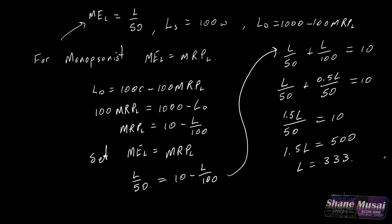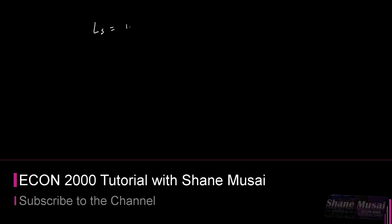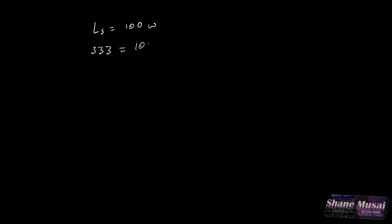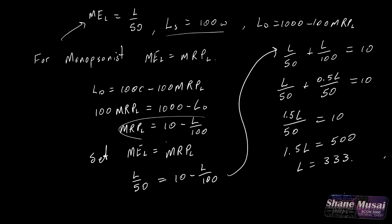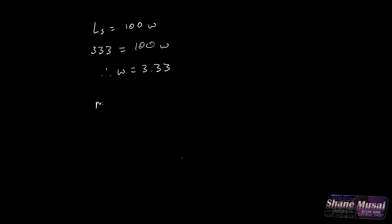Now that we have L equal to 333, we can substitute this into the supply for labor equation to get the wage. The supply for labor is equal to 100W, and L is equal to 333. So 333 equals 100W, therefore W equals 3.33. The question also asks how this wage compares to the MRPL at this employment level. The MRPL equals 10 minus L over 100, which is 10 minus 333 over 100, which equals 6.67.